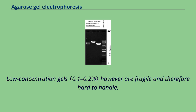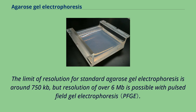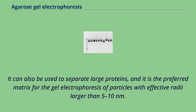Agarose gel has lower resolving power than polyacrylamide gel for DNA but has a greater range of separation, and is therefore used for DNA fragments of usually 50 to 20,000 bp in size. The limit of resolution for standard agarose gel electrophoresis is around 750 kilobases, but resolution of over 6 megabases is possible with pulse field gel electrophoresis. It can also separate large proteins and is the preferred matrix for particles with effective radii larger than 5–10 nanometers.